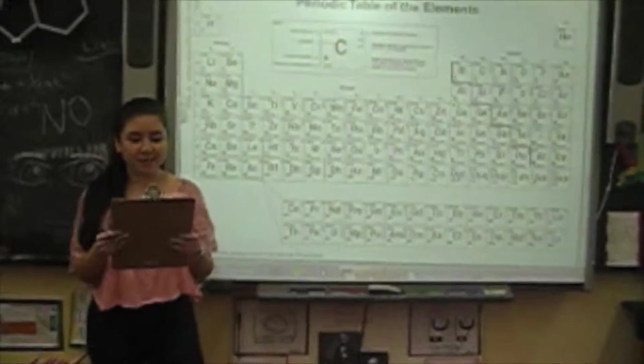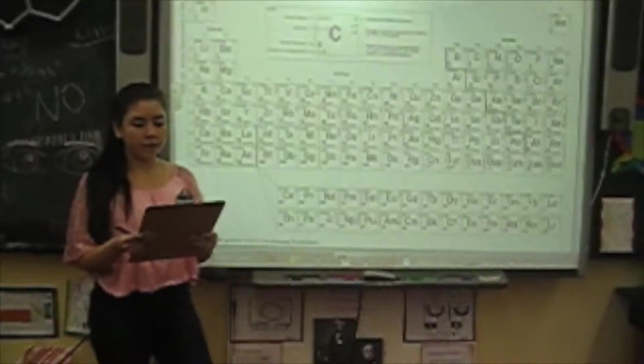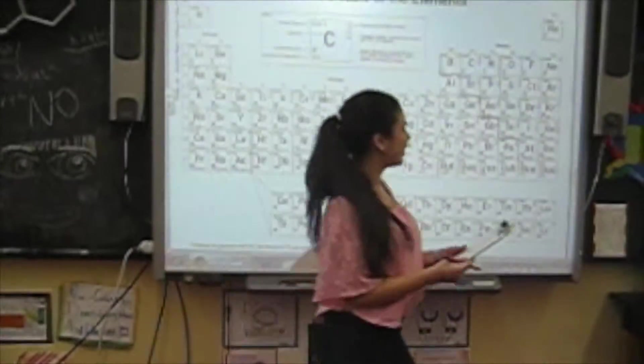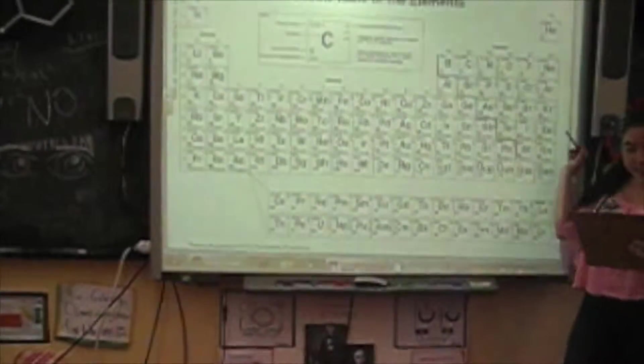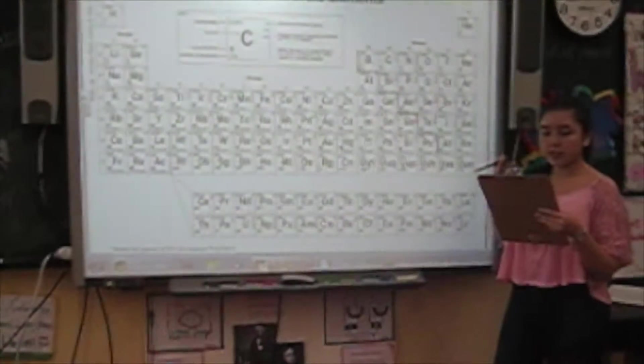Nonmetals evidently want 8 valence electrons because they represent stability. Therefore, group 18 is excluded because they are already stable since they have 8 valence electrons.